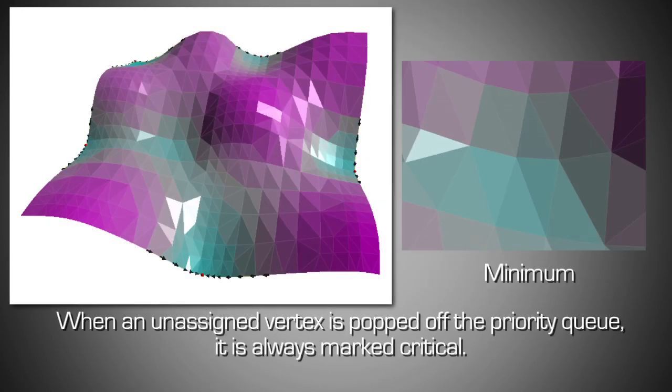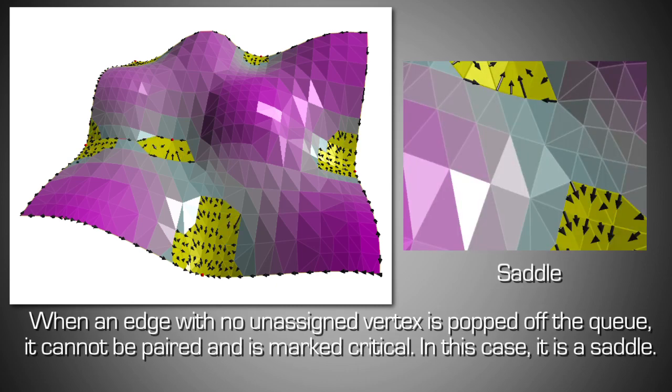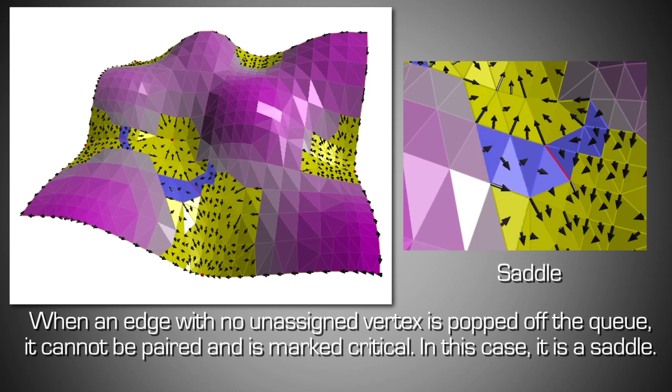When an unassigned vertex is popped off the priority queue, it is always marked critical. When an edge with no unassigned vertex is popped off the queue, it cannot be paired and is marked critical. In this case, it is a saddle.